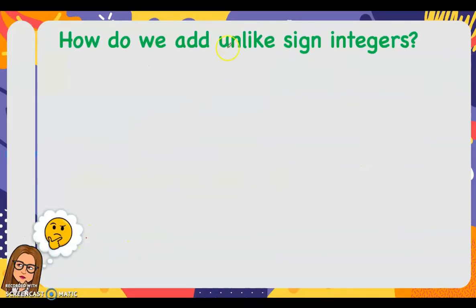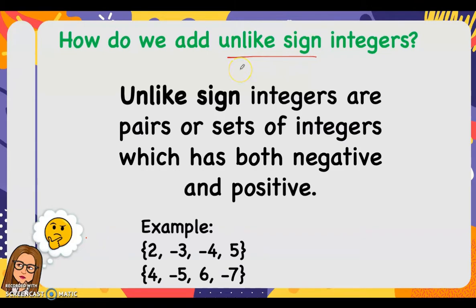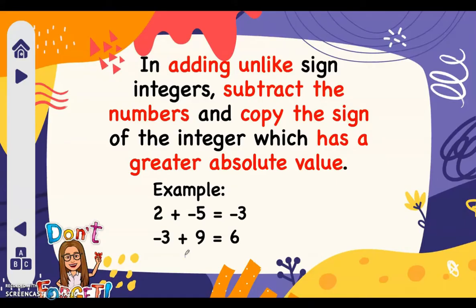Now, how about if we add unlike sign integers? When we say unlike sign, these are pairs or sets of integers which have both negative and positive — for example, two and negative three, negative four and five, four and negative five, six and negative seven. In adding unlike sign integers, subtract the numbers and copy the sign of the integer which has a greater absolute value.